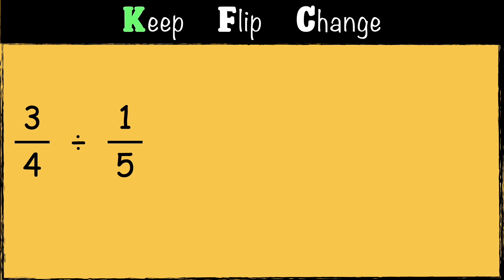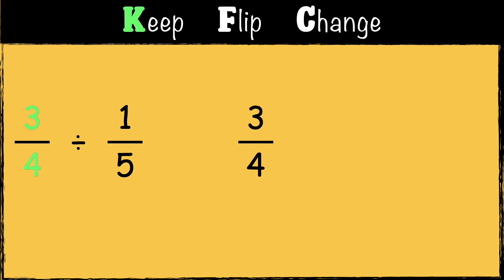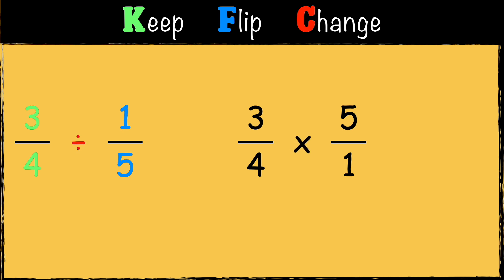First we have Keep — we keep the first fraction exactly as it is: three-quarters. Next we have Flip — we flip the second fraction, so instead of one-fifth it becomes five over one. Finally we have Change — we change the calculation from division to multiplication, so now we have three-quarters multiplied by five over one.